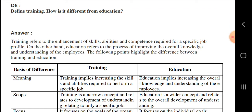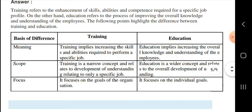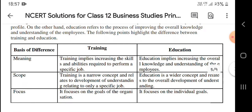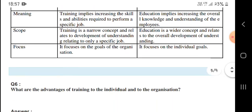Next, what is training and how it is different from education? Training refers to the enhancement of skills, ability and competence required for a specific job profile. Training implies increasing the skill for a specific job, but education implies increasing the overall knowledge. Training is a narrow concept and relates to development of understanding relating to only a specific job, whereas education is wider - to know about everything.